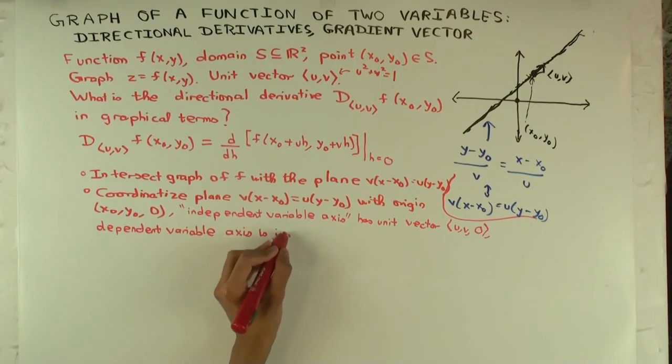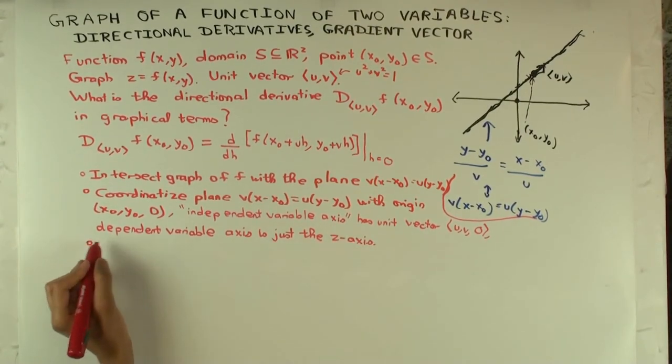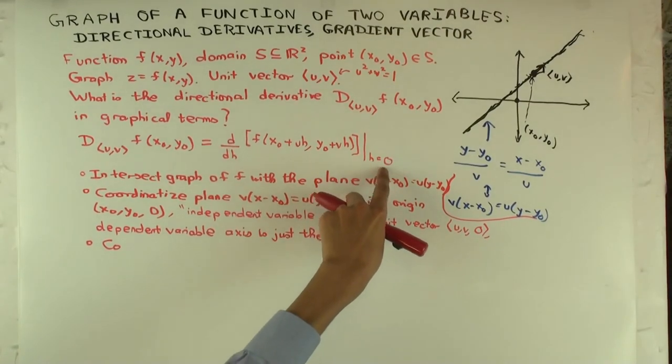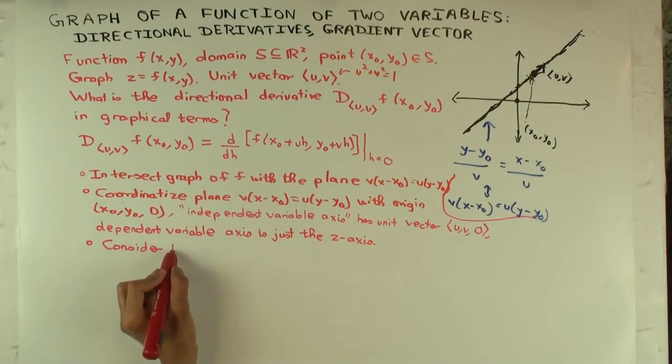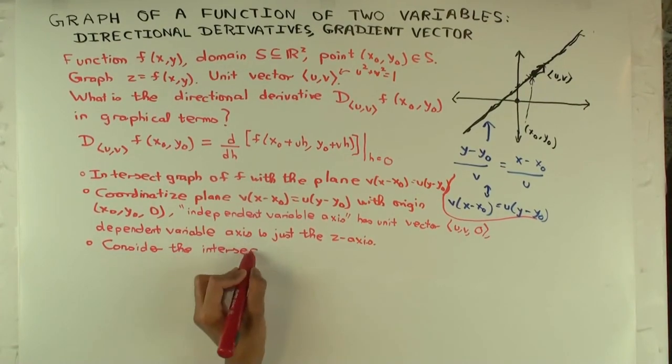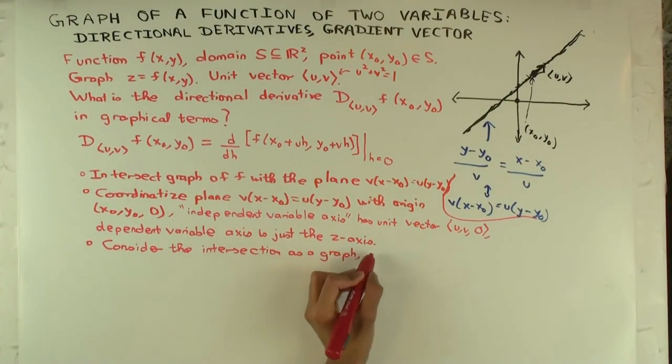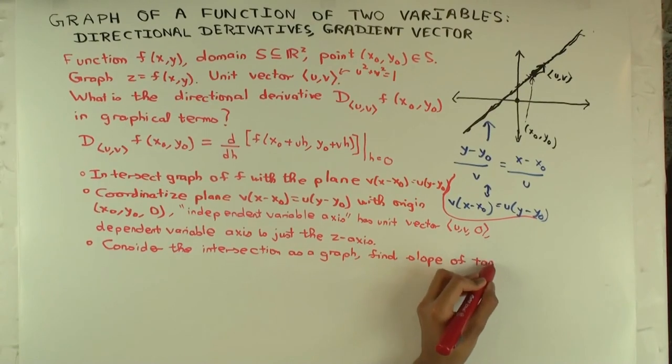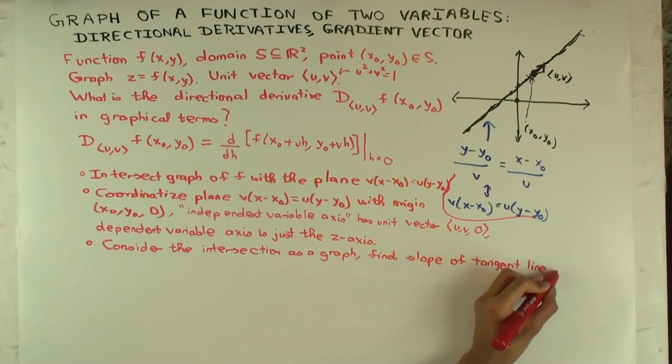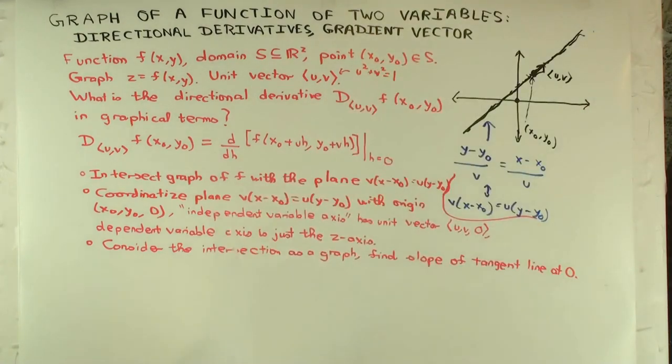And now you want to consider the slope of the tangent line. At what value of the independent variable? What value do you take the ordinary derivative at? The intersection as a graph of a function. Find slope of the tangent line at 0. So this is it as far as the directional derivatives are concerned. So as you rotate this direction, what's happening to the plane? You're changing the plane and the slope of the tangent line. So the directional derivative could change as you change the direction.